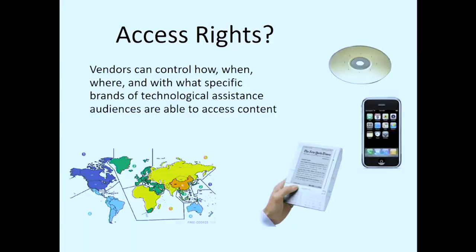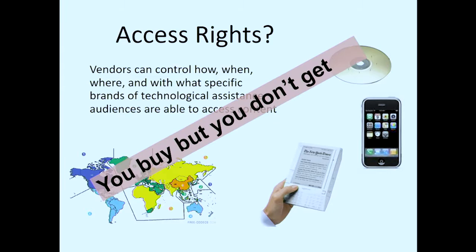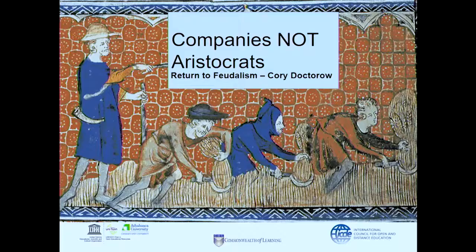Cory Doctorow calls this a return to feudalism, where lords owned everything and we just worked for them — now it's companies, not aristocrats. A farmer in Saskatchewan bought a second-hand Massey Ferguson tractor and it didn't work because Massey Ferguson had deleted the software and demanded $10,000 to reinstate it. The farmer's 12-year-old son found the software on the dark web and installed it — which was technically an illegal criminal offence.